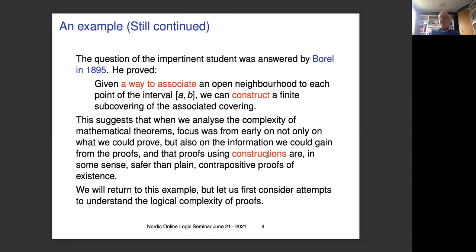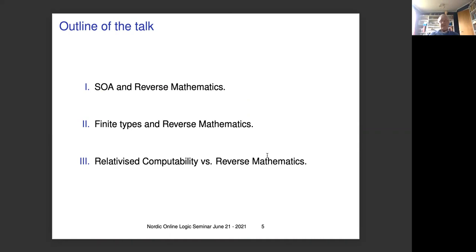But let us first consider what it means to study the logical and, after a while, the computational complexity of proofs. The outline of my talk will cover: first, second-order arithmetic and reverse mathematics — an expository part; second, an extension of the program to finite types and reverse mathematics; and finally, third, we will discuss both relativized and generalized computability versus reverse mathematics, or what you could call the ideology of reverse mathematics.